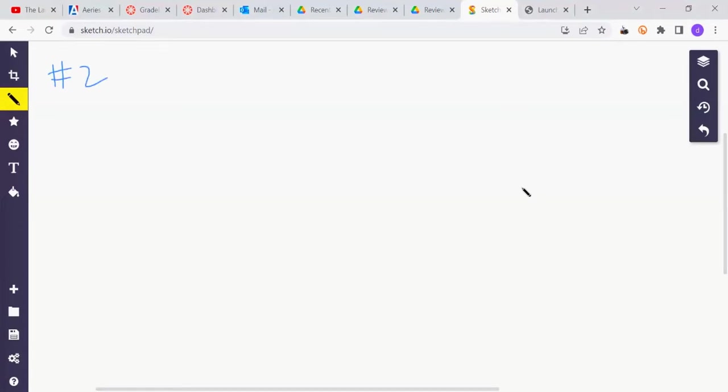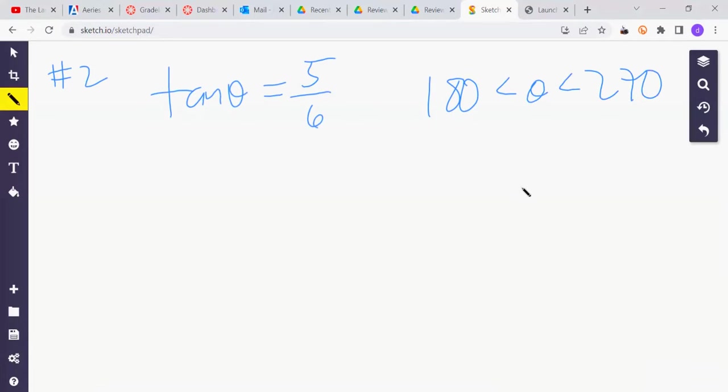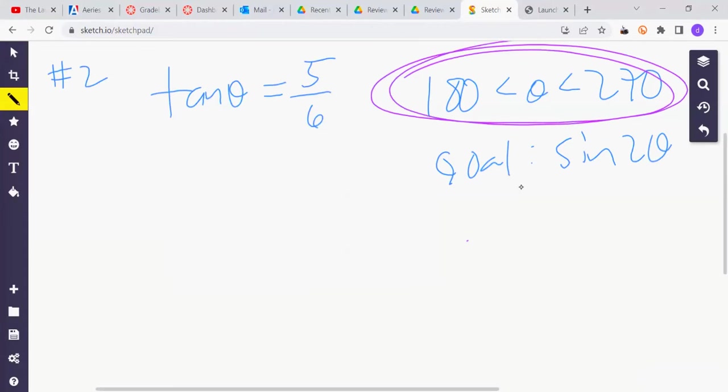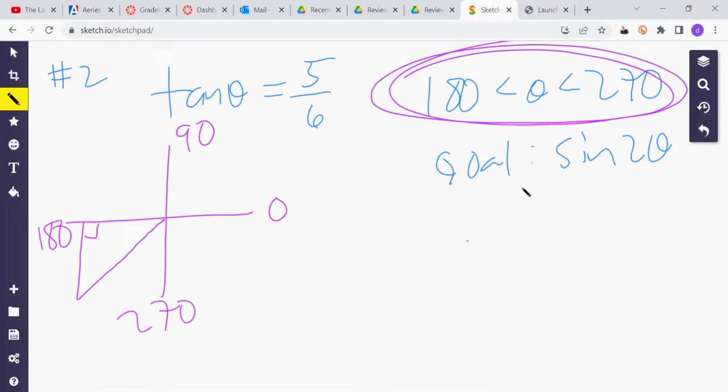So, number two on the review, we're given that tangent of theta is 5 sixths, and theta is bounded by these angles, and the goal is the sine of 2 theta. I would begin with deciding which quadrant to go to, right here. Recall that this is like 0, 90, 180, and 270. So if we're between 180 and 270, then we're going to operate down here.